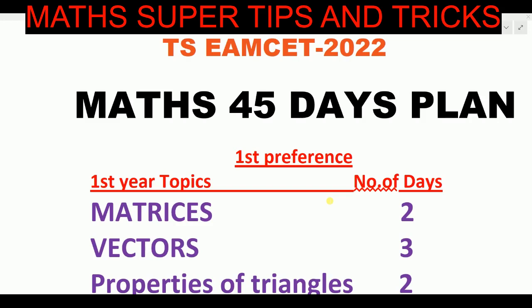If you want to talk about the 45-day plan, we start with the first topic and first preference. The first topic is matrices — you will have to complete matrices in two days. There are about three to four questions. Next, vectors — this is first year, first preference. Vectors take three days, including dot product and cross product vectors.